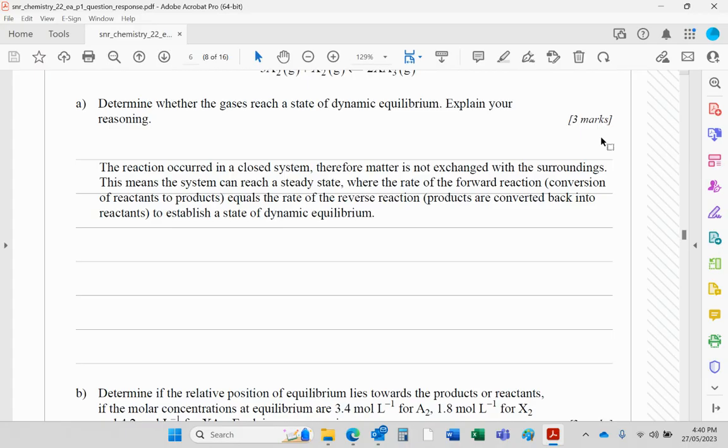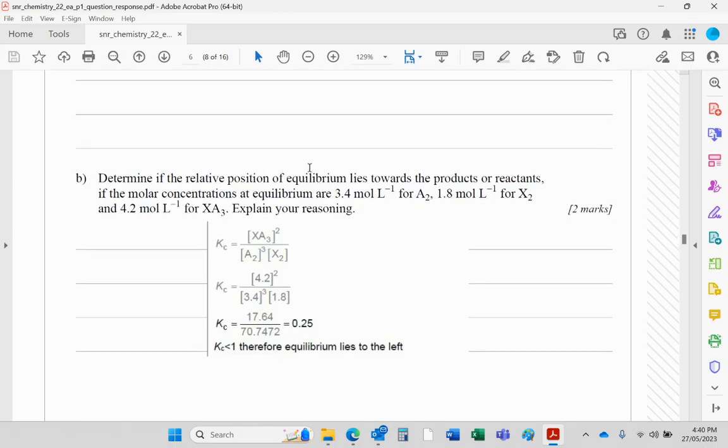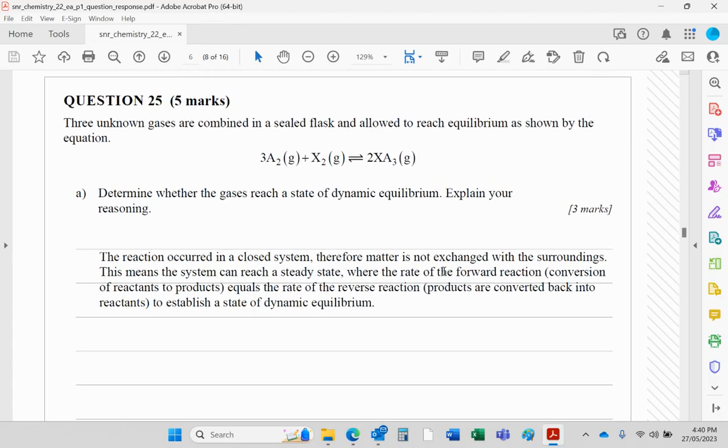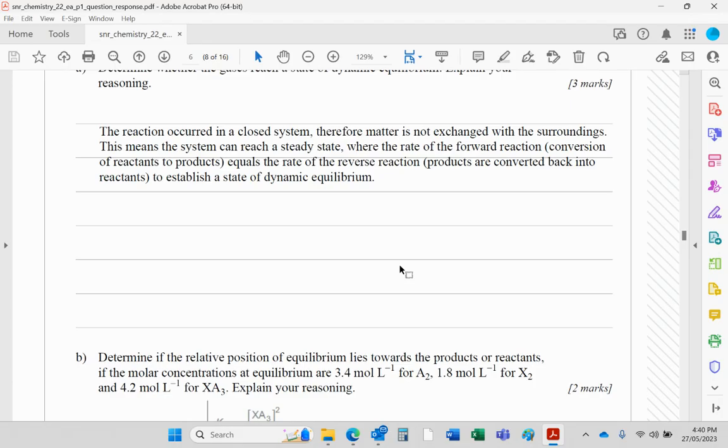Determine if the relative position of equilibrium lies towards the products or reactants if the molar concentrations are 3.4, 1.8, and 4.2. Effectively, we work out Kc using those values, remembering of course to square this one and cube that one. When you do that, the Kc works out to be 0.25. Since it's less than one, we can deduce the equilibrium is on the left.